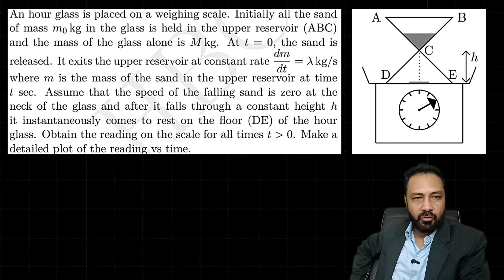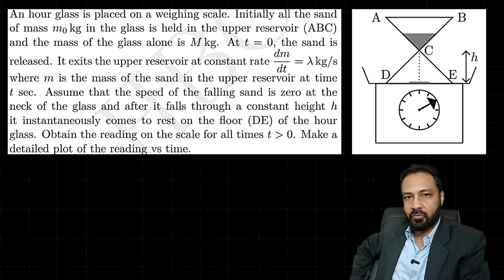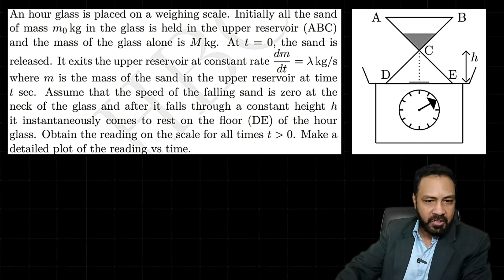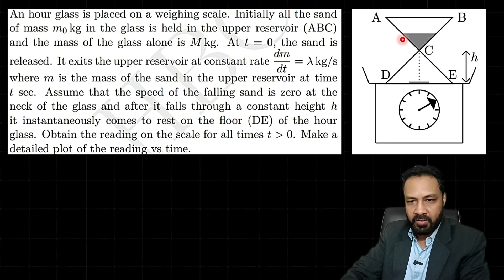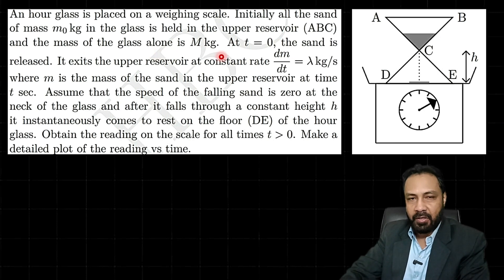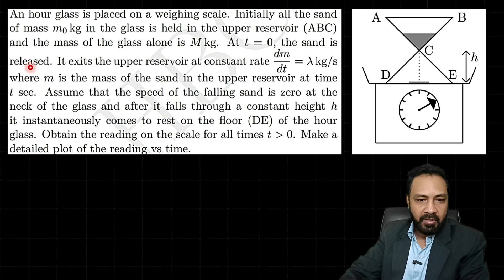Hey all, this is Prajesh Chaudhary. Let's see this very quick problem of variable mass dynamics from INPHO 2018. The question states: an hourglass is placed on a weighing scale. Initially, all the sand of mass m₀ kg in the glass is held in the upper reservoir ABC, and the mass of the glass alone is M kg. At t = 0, the sand is released.